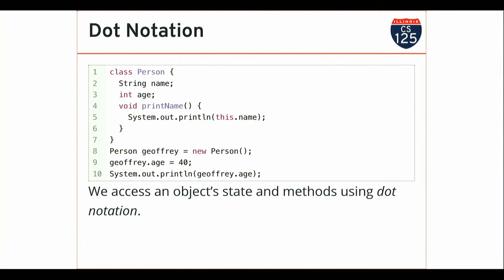On line seven I'm creating a new Person object — I have the `new` keyword and the type. Because I have an instance of this class, every instance has both an age and a name. I can set that variable using dot notation: I use the variable that stores the object, then a dot, then the field name — this looks just like assigning to a variable. Java knows that `age` is an integer because that's how I've defined it in my class declaration. I can both set and get it like a normal variable.